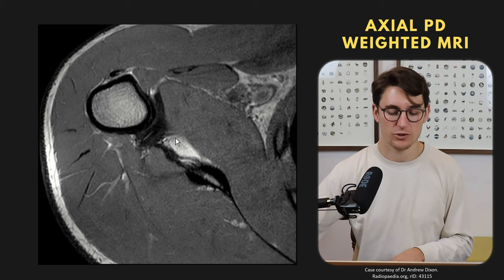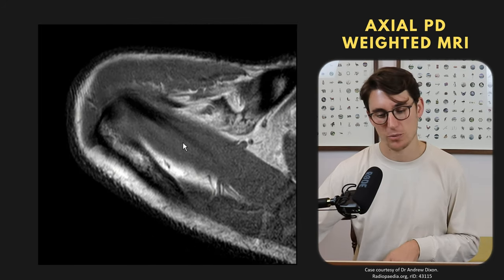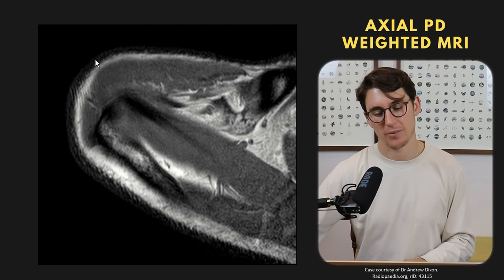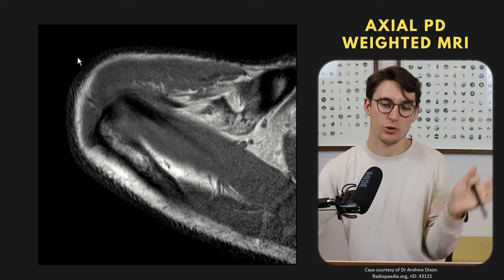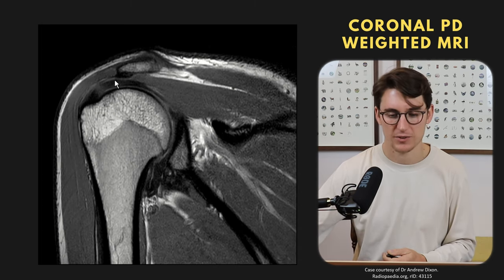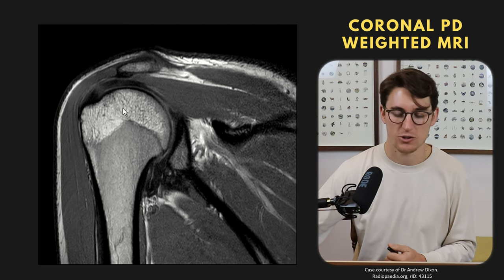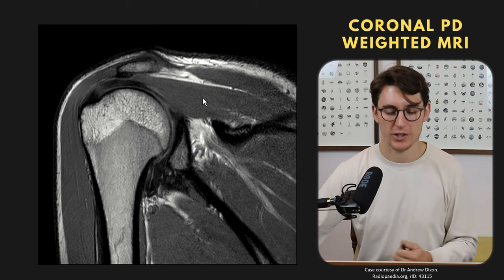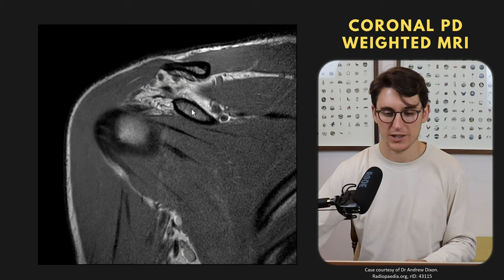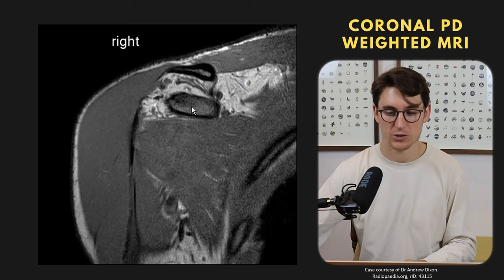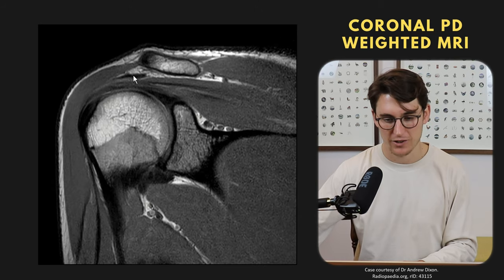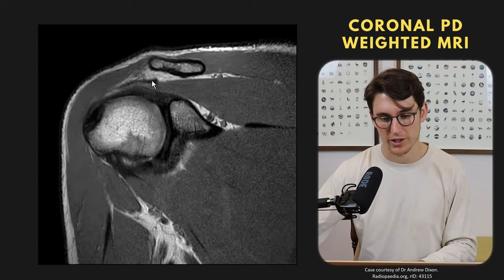Moving to the coronal views — this is actually a coronal oblique view, with cuts perpendicular to the supraspinatus tendon as seen on the axial. We can see the supraspinatus coming across to the superior border of the greater tuberosity. To determine anterior versus posterior, we find the coracoid process coming anteriorly from the glenoid — that tells us which side is anterior. From there we can identify the coracoclavicular ligament and the coracoacromial ligament running from the acromion all the way across to the coracoid.